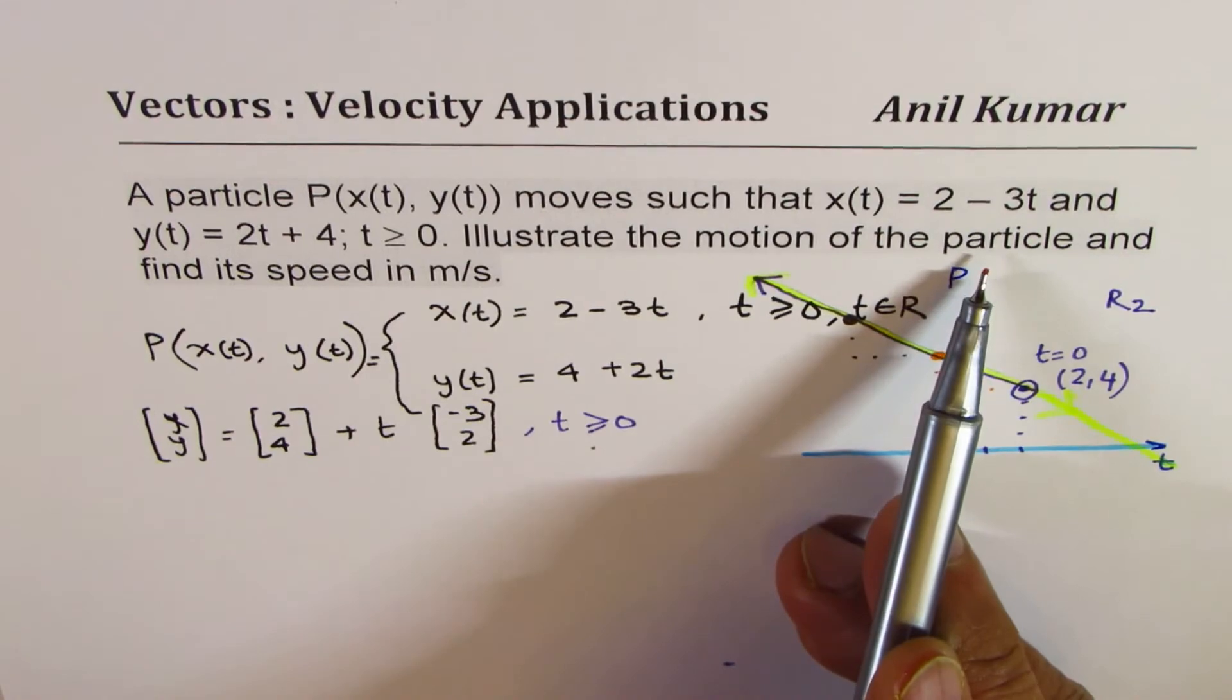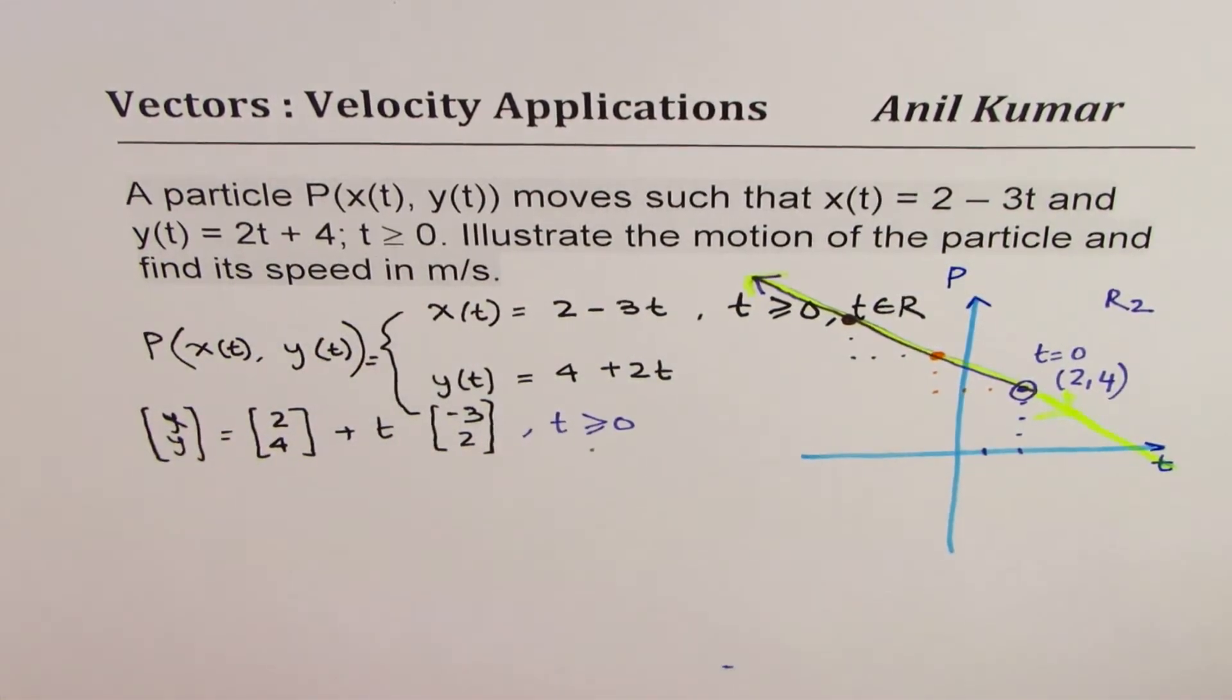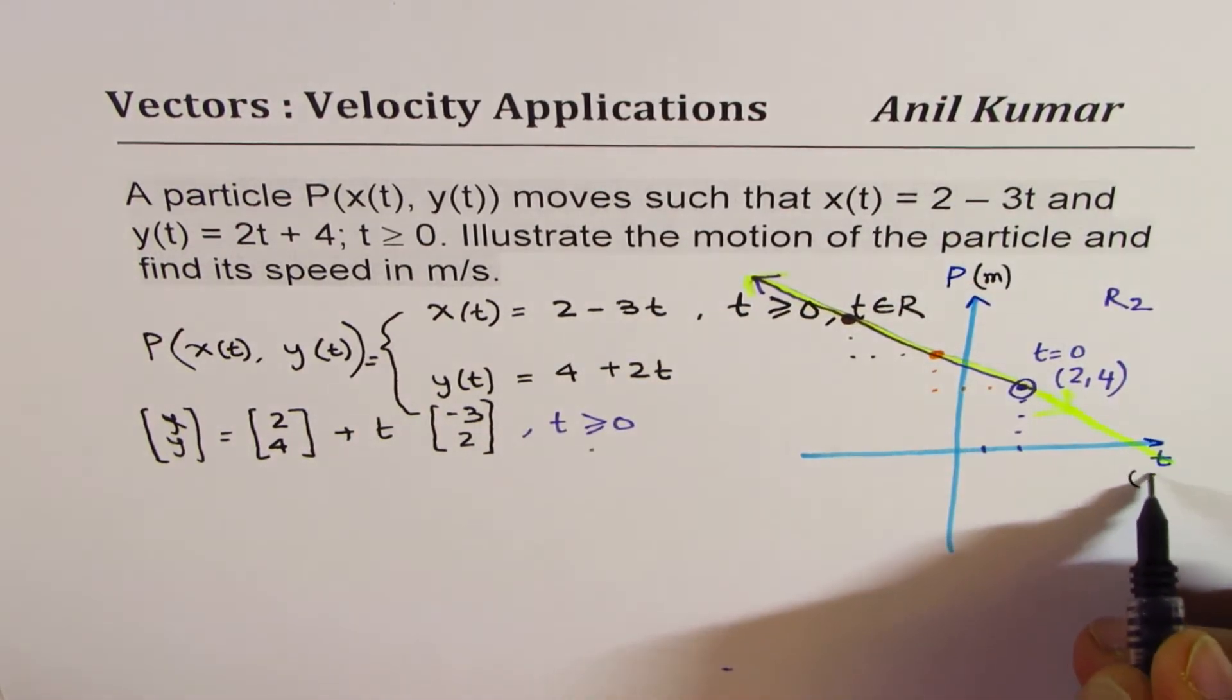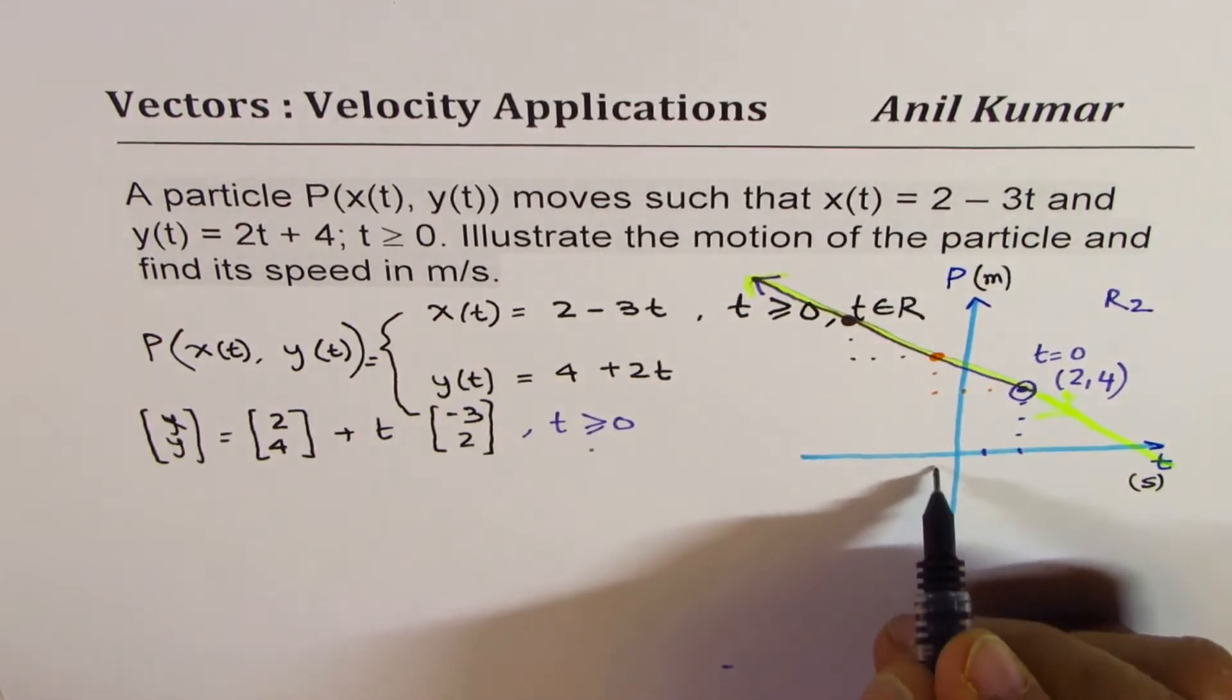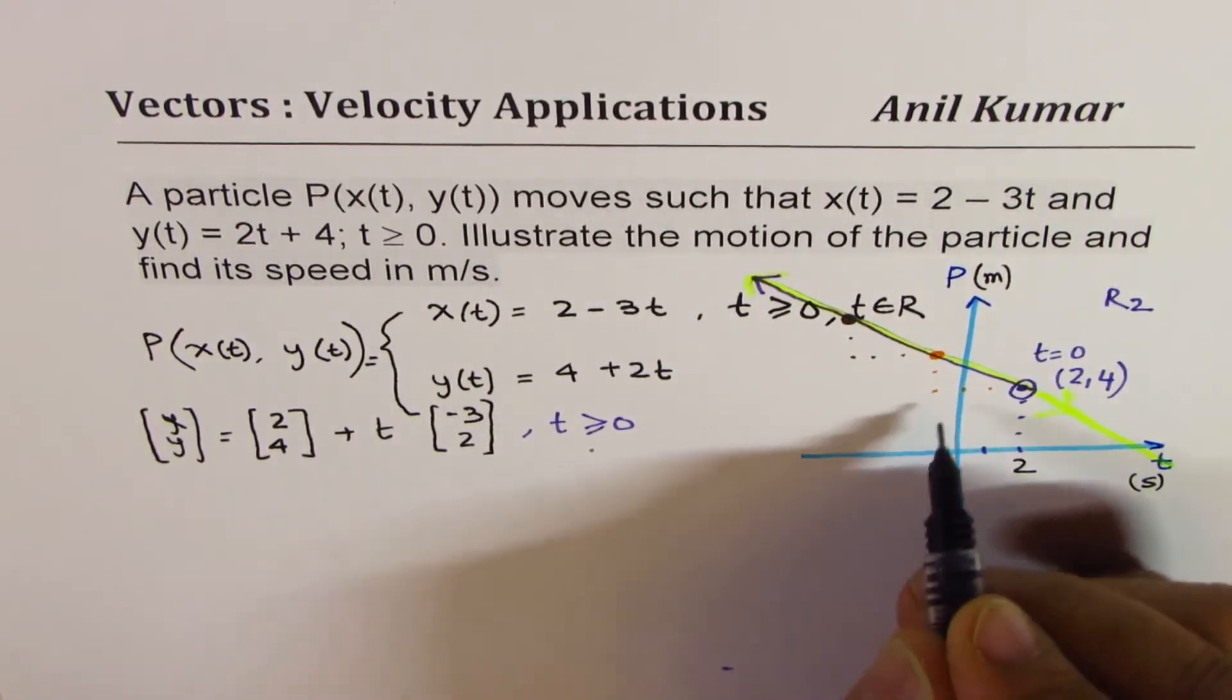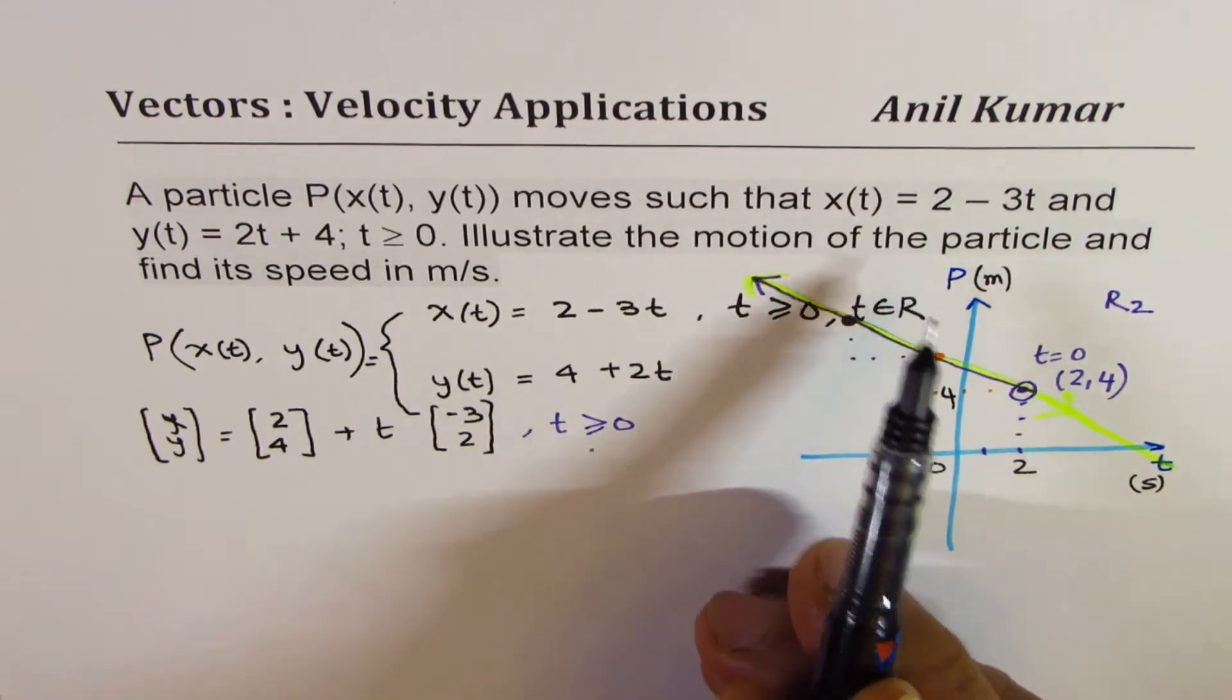I hope this part is absolutely clear—you understand this motion. That is how you can illustrate the motion of the particle. Now what we need to find is speed in meters per second. We will assume the plane—time is in seconds and position is given in meters. Position in terms of meters and time in terms of seconds does make sense to you?